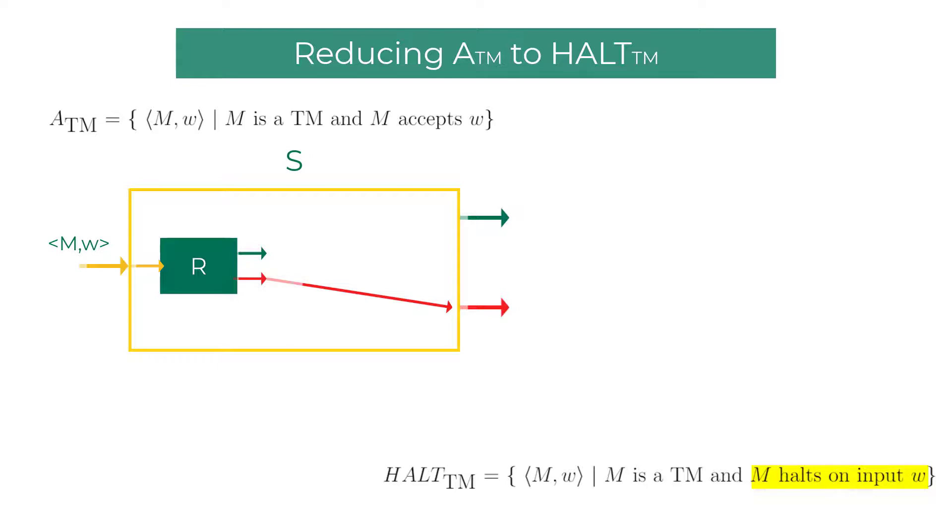So what do we do now? What we can do is confidently simulate M on W on a universal Turing machine and see if M ends up in accept state or a reject state. There is no way this universal Turing machine will end up in a loop as HALTTM decider R just certified it will halt for surely on input W. So if the machine M ends up in accept state on string W, make sure S ends up in the accept state.